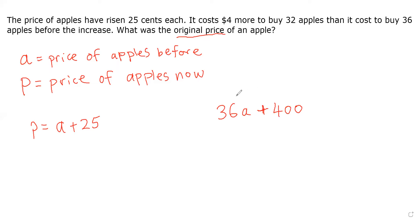So this price is actually equal to the price of buying 32 apples now. So 32 apples times the price of one apple now is going to be P. But what is P? P is just A plus 25. So then this is just 36A plus 400 equal to 32 times A plus 25.